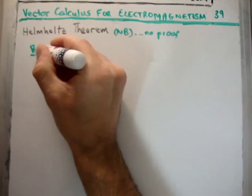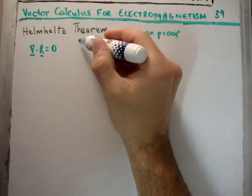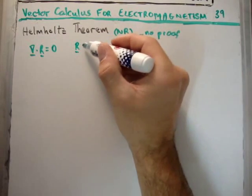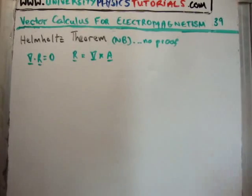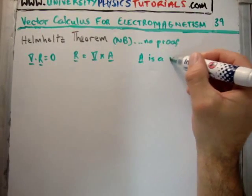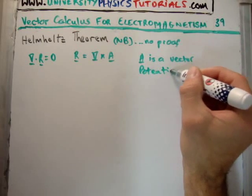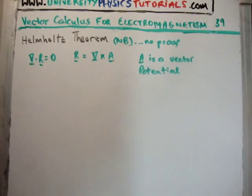Now let's consider a divergence-free field, where the divergence of R equals zero but the curl is non-zero. The Helmholtz theorem says that in this case we can re-express our field as the curl of a vector potential A. It's important that A is a vector potential — it has three components, making it more complicated than a scalar, but it simplifies problems in electrodynamics.